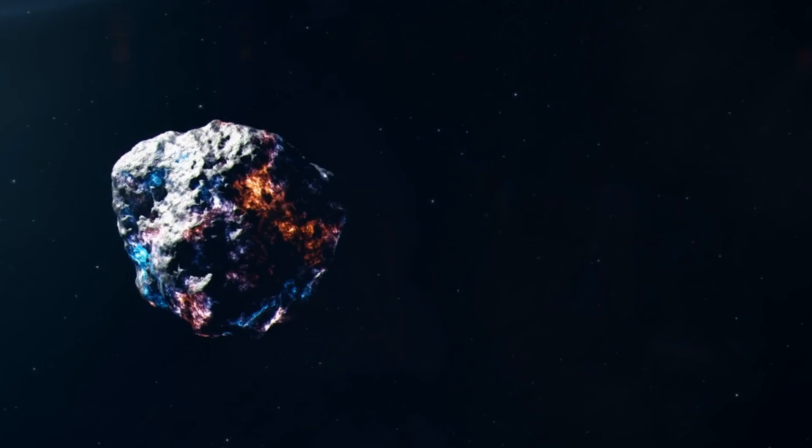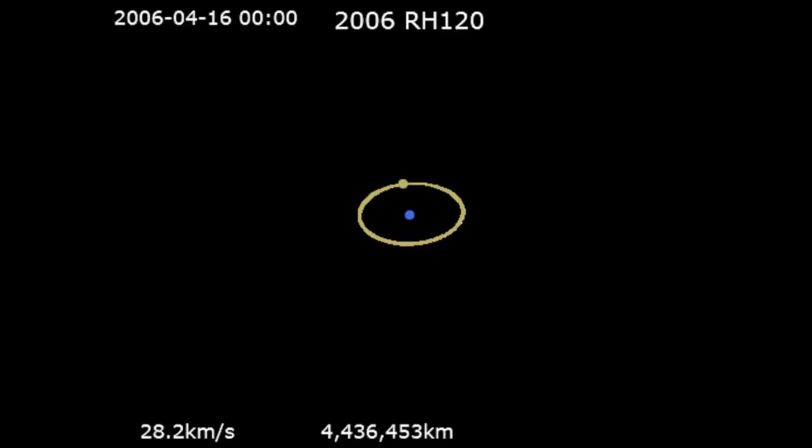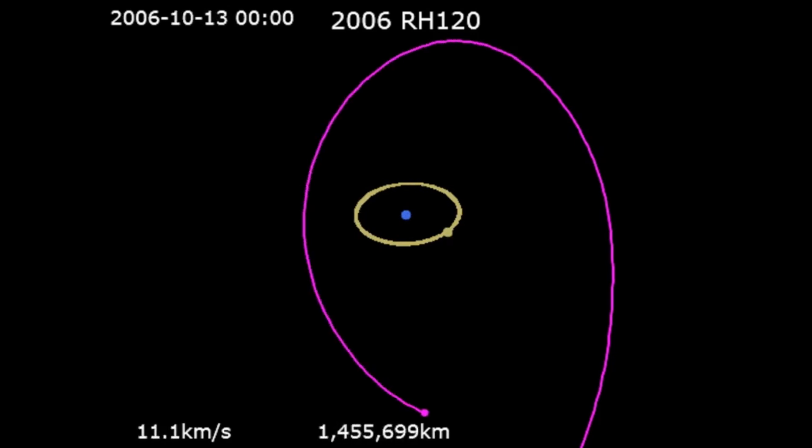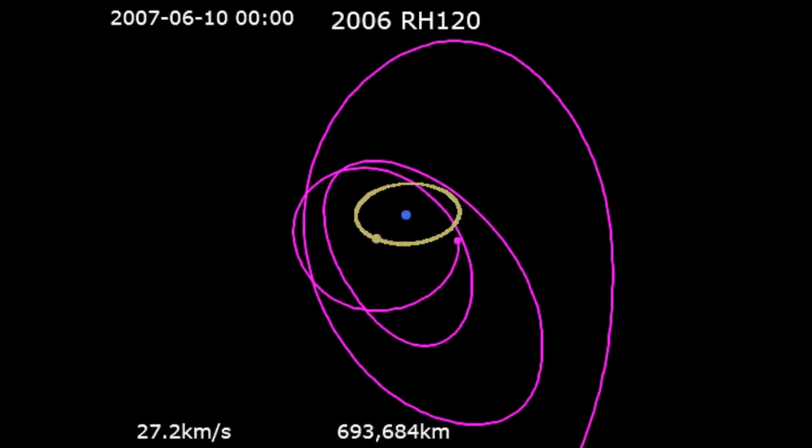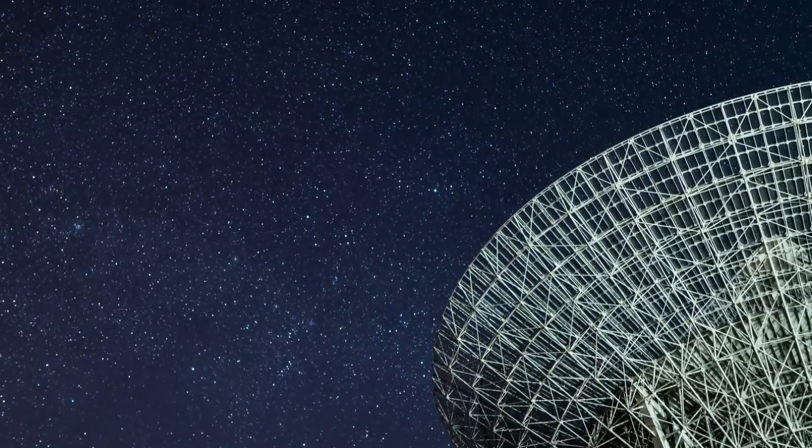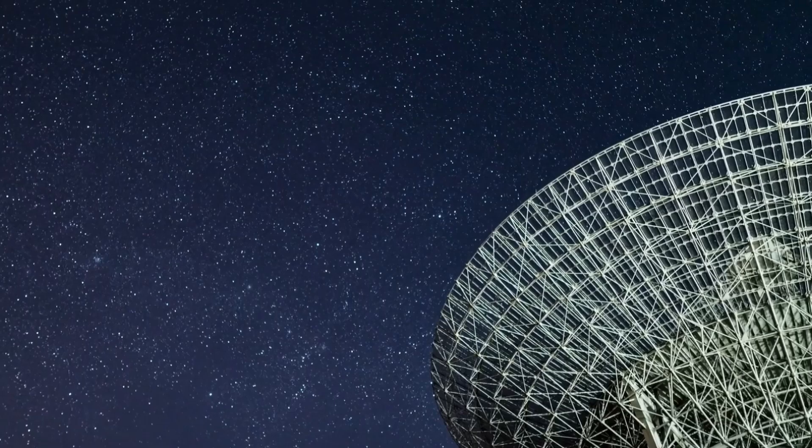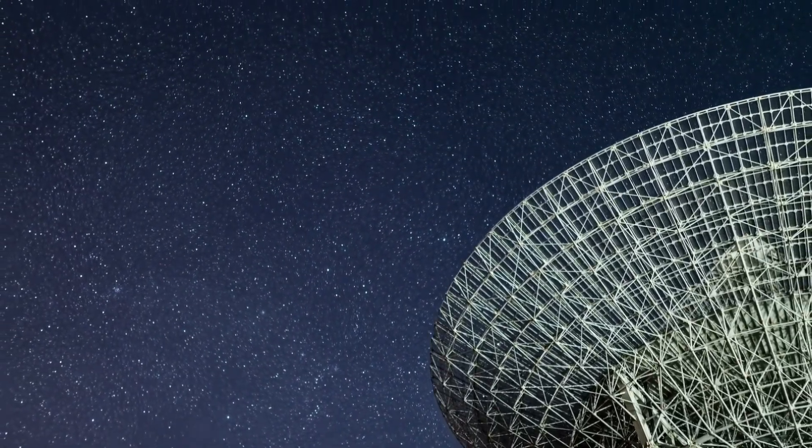While mini-moons might seem rare, Earth has had a few similar visitors in the past. A notable example is 2006 RH120, a small asteroid that orbited our planet from 2006 to 2007. This mini-moon, measuring between 3 and 6 meters across, remained under Earth's gravitational influence for roughly a year, offering astronomers a rare chance to observe a small, near-Earth object in real time.